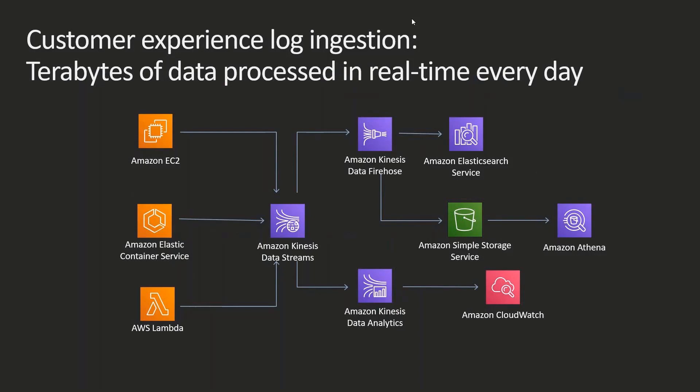Let's look at a log ingestion example where you need to collect logging data from all of your applications — which could be running on Amazon EC2, Amazon Elastic Container Service (ECS), or AWS Lambda. These logs are captured and sent to Kinesis Data Streams, from where they can be processed using Kinesis Data Analytics and Kinesis Data Firehose, and then deposited into S3 or Elasticsearch Service. Through Kinesis Data Firehose, you can request that data be persisted on S3 in a columnar format such as Parquet or ORC, which makes it easier to use Amazon Athena to process these logs.